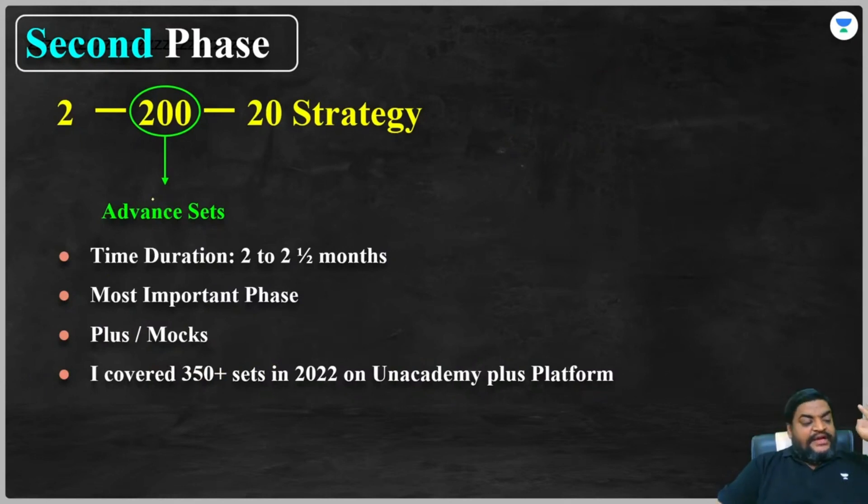This is the most important phase. While you are attempting these 200 advanced sets guys, keep this in mind: don't rush to the solution. Suppose you come across any set, what's a student's habit? What he does? He refers to the answer in five minutes only. He reads the question for two, three minutes. 'Okay, I won't be able to solve it,' and then he refers to the answer. Don't do that. If you are preparing on your own, spend at least 25 to 30 minutes on each set, thinking about the set, trying to solve the set, struggling with the set. That is the most important thing.